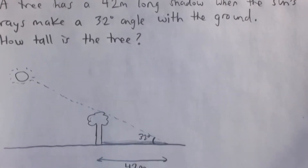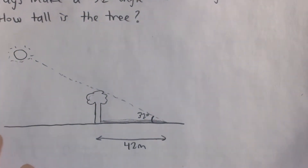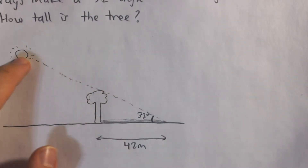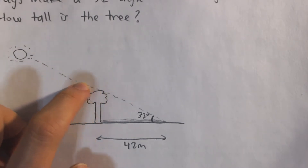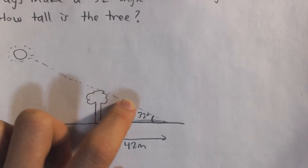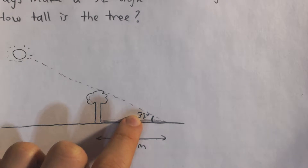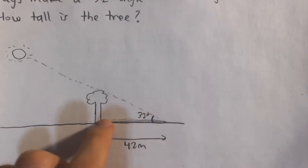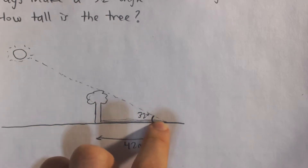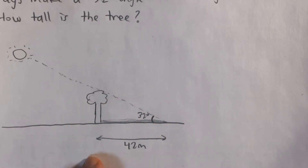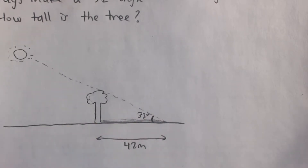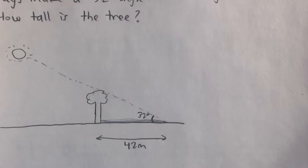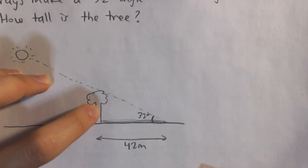Here I made a little diagram. We have our sun with the incoming ray — this is just the top of the tree — and it impacts the ground with an angle of 32 degrees. The shadow is this part along the ground. The shadow's length is 42 meters and it makes a 32 degree angle with the ground, so we can relate these using trigonometry to figure out the height of this tree, this length right here.